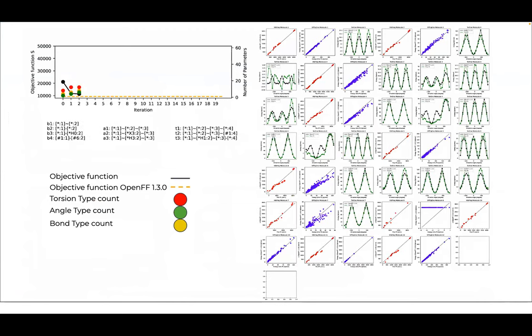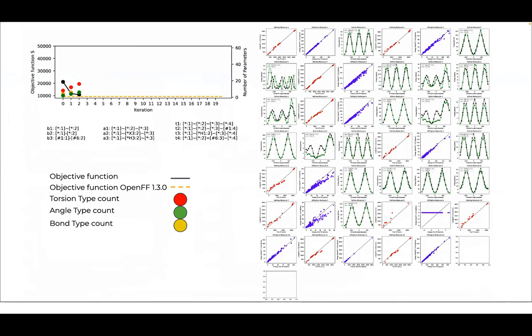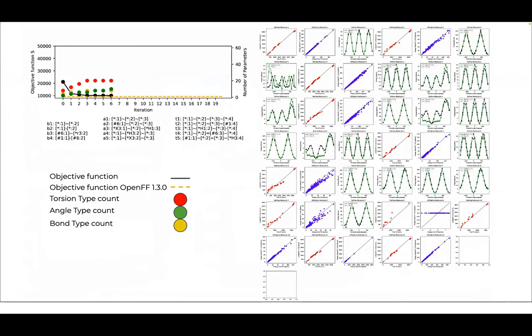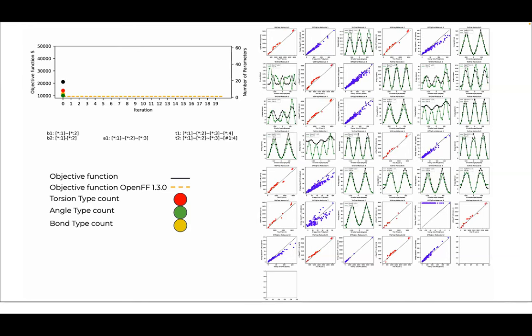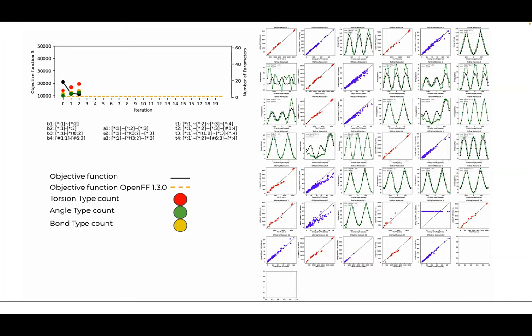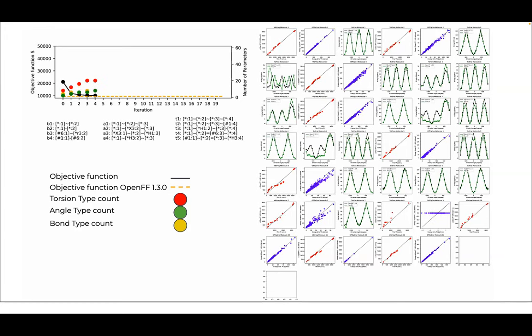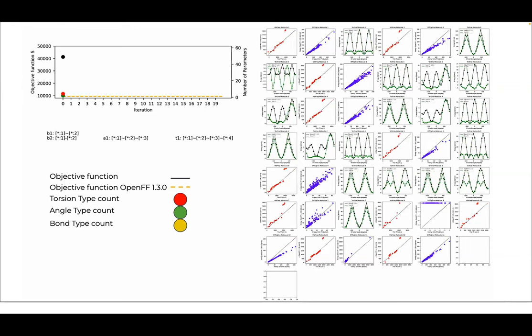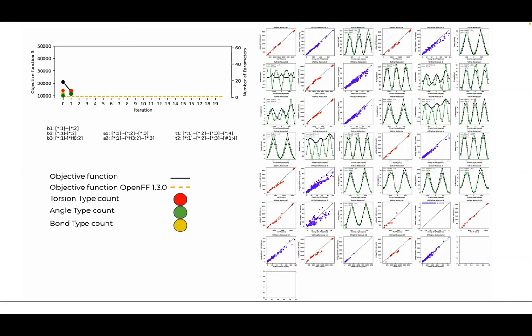So how does the algorithm work in practice. On the top here, the black line indicates the value of the objective function. Red dots are the number of bond types we are covering, the number of angle types in green and the number of torsion types in yellow. And these are the SMARTS patterns we are finding. And on the right, you can see the actual target data as it's evolving. So here, the green lines are torsion profiles, the blue lines are vibrational frequencies and the red dots are conformer energies. And one of the nice things is that you see it takes about 20 iterations and we are pretty much converged after iterations. We think we can get this possibly in less than half a day.